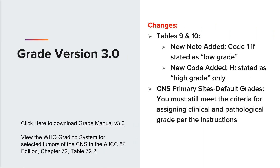Some changes to the current grade manual for Tables 9 and 10 for the heart, mediastinum, and pleura; Kaposi sarcoma; orbital sarcoma; retroperitoneum; soft tissue abdomen and thoracic; soft tissue head and neck; soft tissue trunk and extremities; soft tissue other; and soft tissue rare. A new note was added indicating code 1 may be assigned if grade is stated as low grade only. Also, for the same sites, grade H may be assigned if stated to be high grade only. For default grades, you must still meet the criteria for assigning clinical and pathologic grade per the instructions.